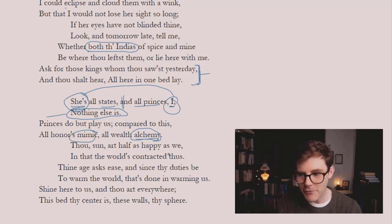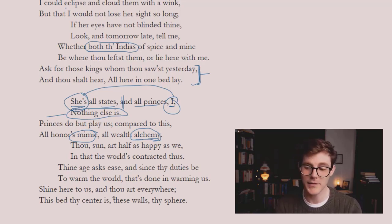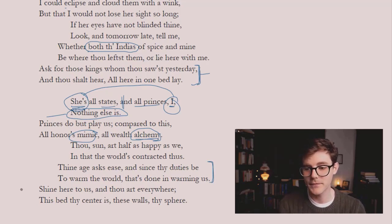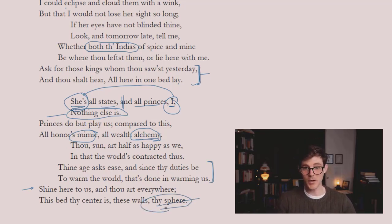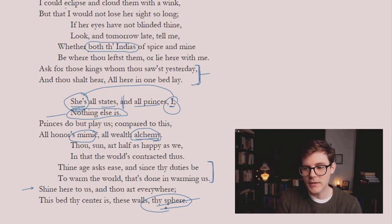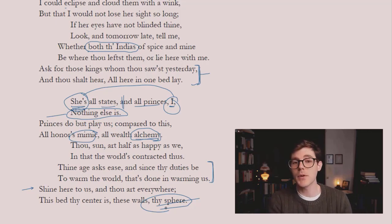'Thou, sun, art half as happy as we, in that the world's contracted thus. Thine age asks ease, since thy duties be to warm the world, and that's done in warming us.' He's saying: you've done enough, you are now irrelevant. 'Shine here to us and thou art everywhere. This bed thy center is, these walls thy sphere.' This hyperbole will come again in Donne's 'The Good Morrow.' So you notice the quality of the dramatic voice — it's direct, idiomatic, and conversationally syntactic, going against the Petrarchan and Elizabethan modes of lyric poetry. In a way, Donne's natural diction and syntax anticipate what the Romantic movement would introduce with poetry that uses 'the natural language of men,' to quote from Wordsworth's preface.